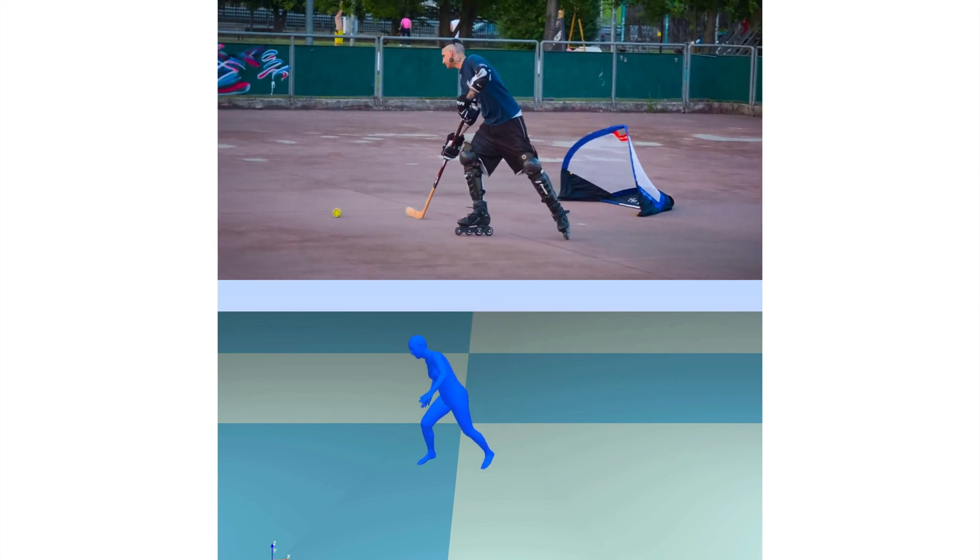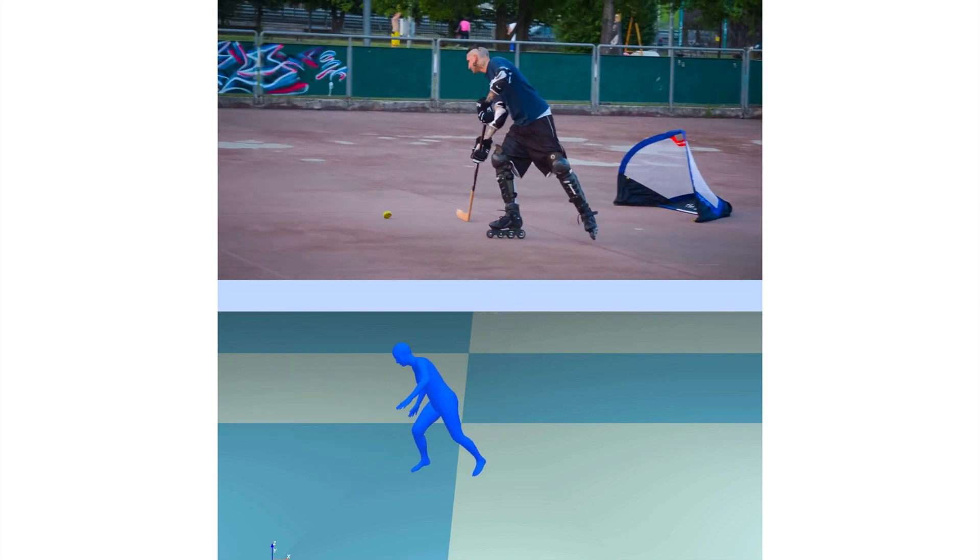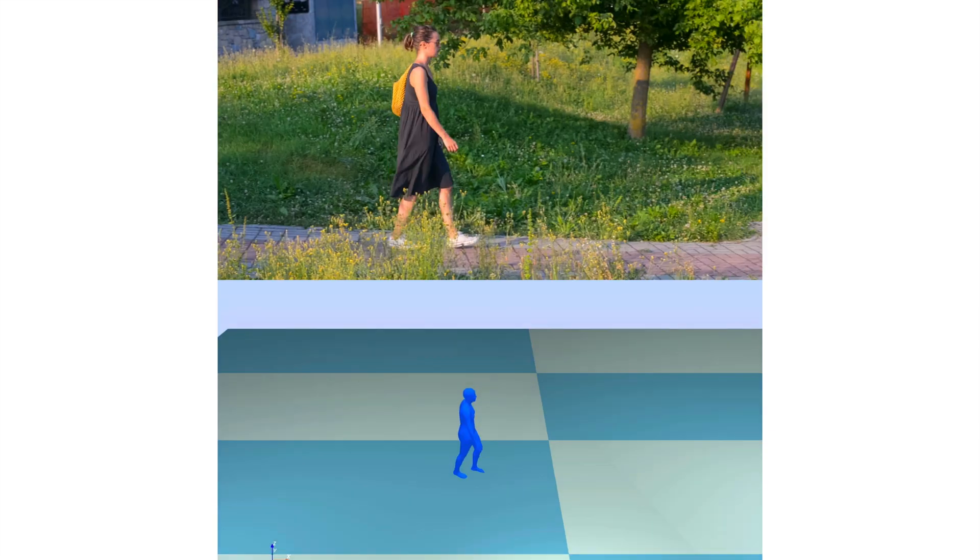Here are some qualitative results on Internet videos. In conclusion, we introduce a one-stage method for reasoning about 3D people along with their temporal trajectory and identity in global coordinates. To do so, we leverage a novel 5D representation.